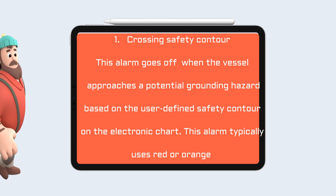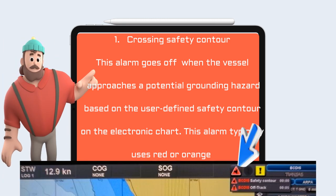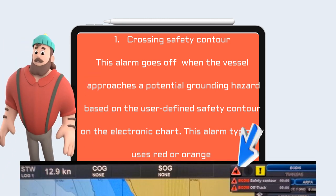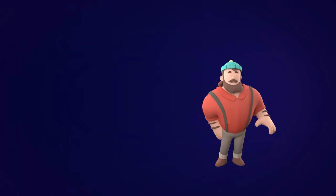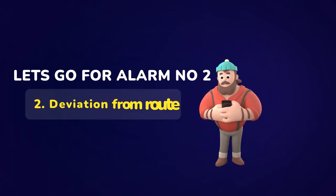1. Crossing Safety Contour. This alarm goes off when the vessel approaches a potential grounding hazard based on the user-defined safety contour on the electronic chart.